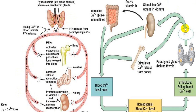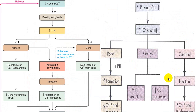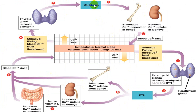Parathormone acts on the bone to activate osteoclastic activity and shift calcium from bone into blood. In the small intestine, via activation of vitamin D3, it increases the absorption of calcium. On the kidney, it increases the reabsorption of calcium. All three — bone, intestine, and kidney — increase the calcium level. As soon as the calcium level increases, parathormone will be inhibited. This action on the GI tract is indirect, via vitamin D3 activation in the kidney.